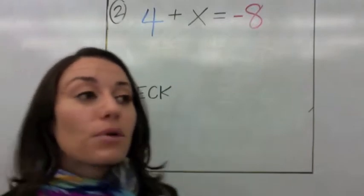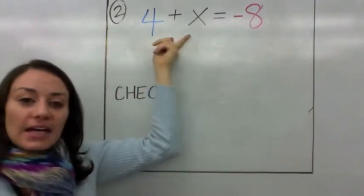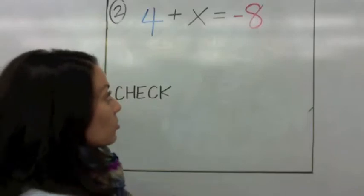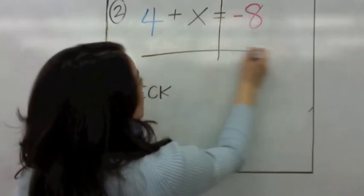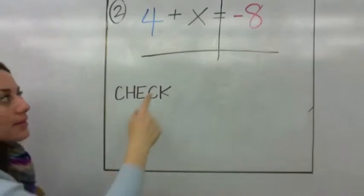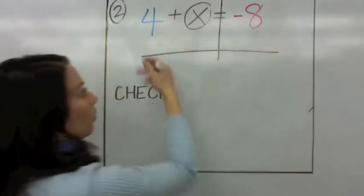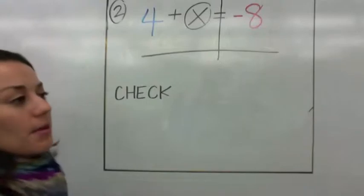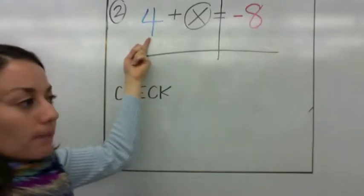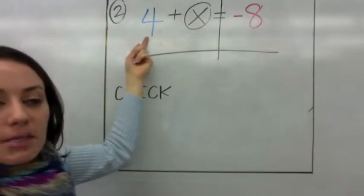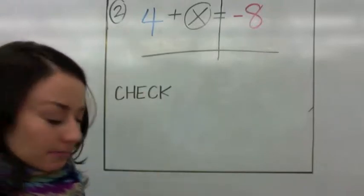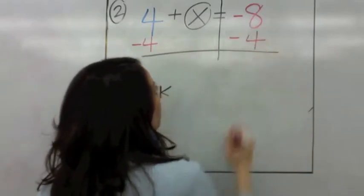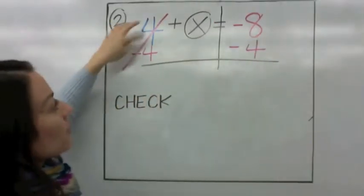Let's try equation number 2. It says 4 plus x equals negative 8. We're going to start solving by drawing a T to separate both sides. We're trying to solve for x — 4 plus some number gives me negative 8. The number next to x is positive 4, so the opposite would be negative 4, so we're going to subtract 4 from both sides. Positive 4 and negative 4 make 0.